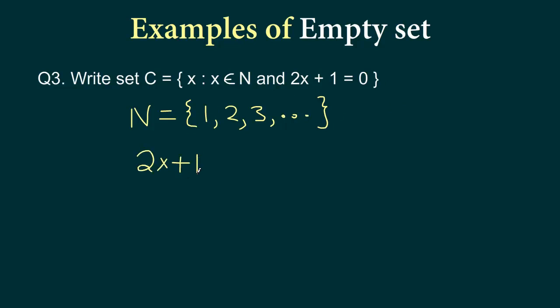2x plus 1 equals 0. Let's get the plus 1 on the other side. So we will get 2x equals minus 1. Now let's divide both sides by 2. So this will cancel out. So we will be left with x. But in other words, x equals minus 1 by 2.